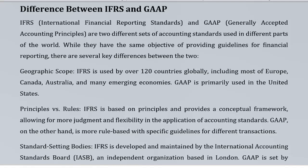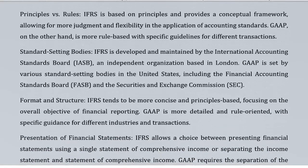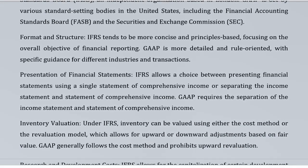Principles versus rules: IFRS is based on principles and provides a conceptual framework, allowing for more judgment and flexibility in the application of accounting standards. GAAP, on the other hand, is more rule-based with specific guidelines for different transactions. Standard-setting bodies: IFRS is developed and maintained by the International Accounting Standards Board (IASB), an independent organization based in London. GAAP is set by various standard-setting bodies in the United States, including the Financial Accounting Standards Board (FASB) and the Securities and Exchange Commission (SEC). Format and structure: IFRS tends to be more concise and principles-based, focusing on the overall objective of financial reporting. GAAP is more detailed and rule-oriented, with specific guidance for different industries and transactions.